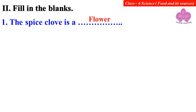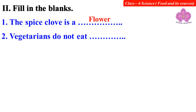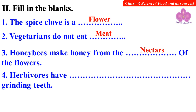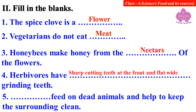Fill in the blanks. Number 1: The spice clove is a dash. Answer: Flower. Number 2: Vegetarians do not eat — Meat. Number 3: Honeybees make honey from the dash of the flowers — Nectar. Number 4: Herbivores have sharp cutting teeth at the front and flat wide grinding teeth. Number 5: Dash feed on dead animals and help to keep the surrounding clean. Answer: Scavengers.